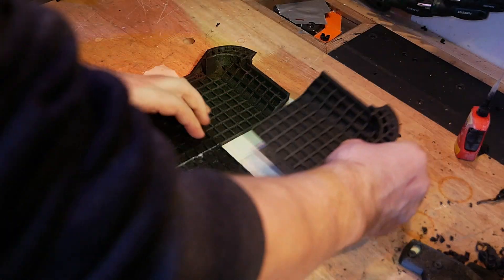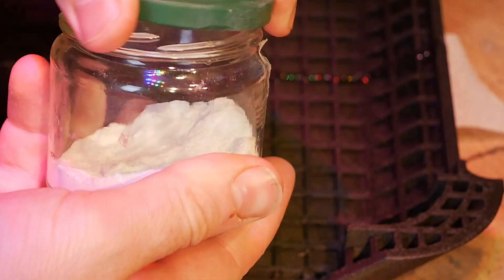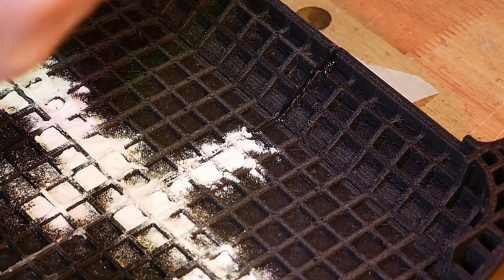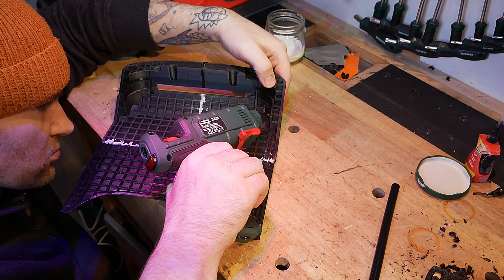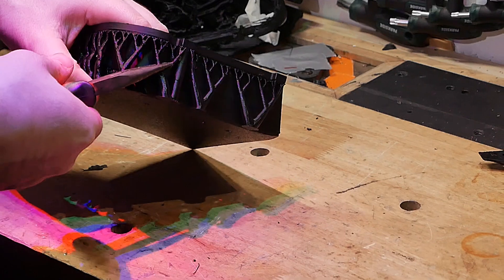I connect the individual parts with superglue and a hot glue gun. To make the superglue cure faster, I use sodium carbonate, a trick I recently learned from a model maker. Additionally, I reinforce some of the connections with small metal pins to make the construction even more stable.